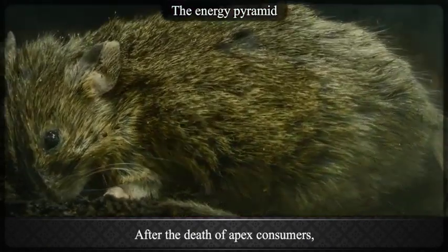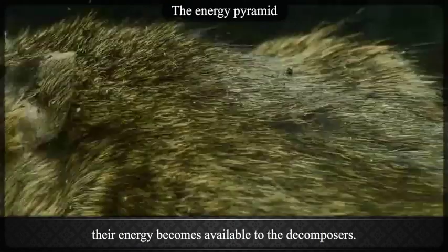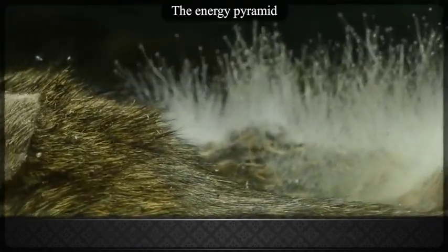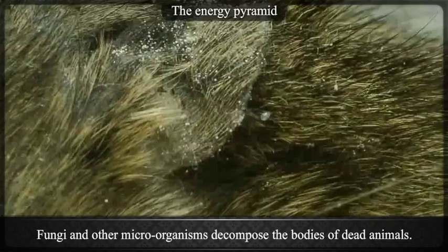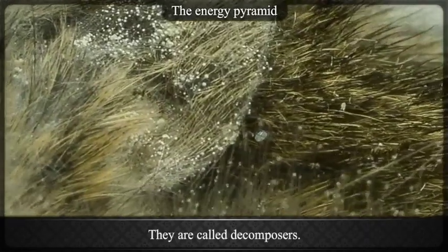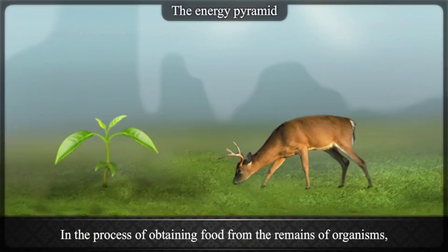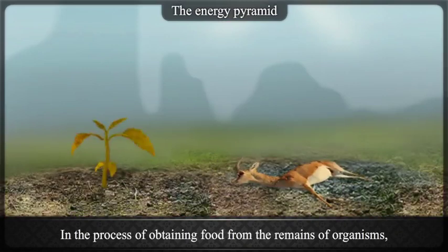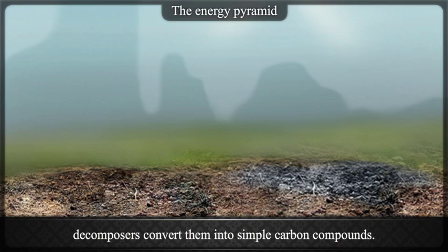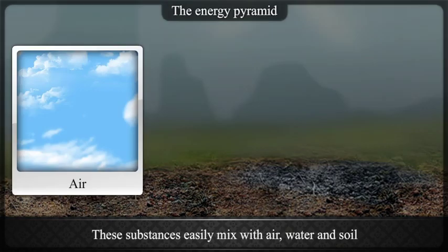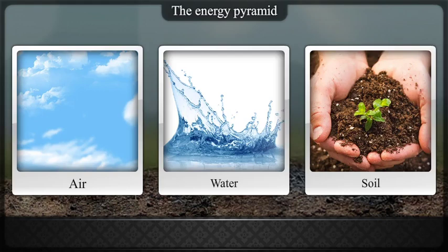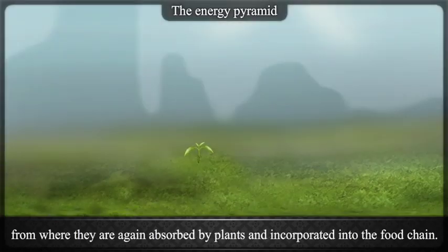After the death of apex consumers, their energy becomes available to the decomposers. Fungi and other microorganisms decompose the bodies of dead animals — they are called decomposers. In the process of obtaining food from the remains of organisms, decomposers convert them into simple carbon compounds. These substances easily mix with air, water and soil, from where they are again absorbed by plants and incorporated into the food chain.